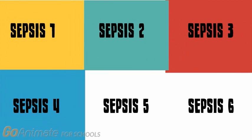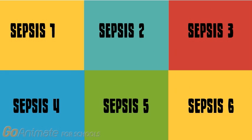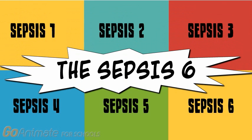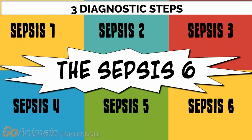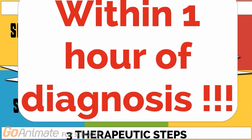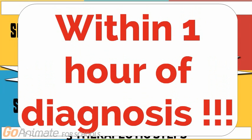In order to combat sepsis, there have been guidelines released called Sepsis 6. This was designed to evoke early interventions and consists of three diagnostic and three therapeutic steps to be delivered by staff within one hour of diagnosis. In the following segment, we'll explain the Sepsis 6 and why it is an effective tool in treating this illness.